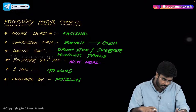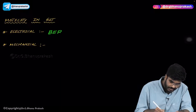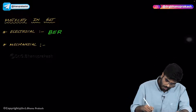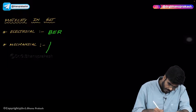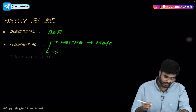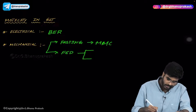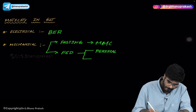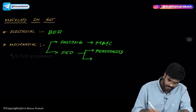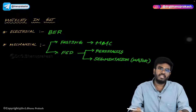To summarize: in the GI tract there are two types of motility — electrical and mechanical. Electrical motility is the Basal Electrical Rhythm, which is the restless membrane potential. Mechanical motility is divided by state: during fasting, the Migratory Motor Complex occurs; during the fed state, there are two types — peristalsis and segmentation. Segmentation is the major GI motility.